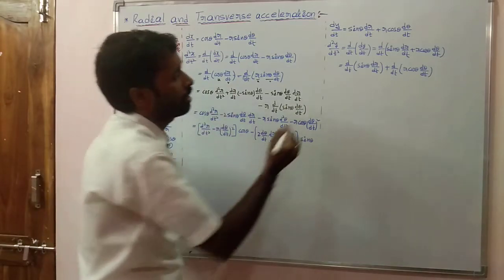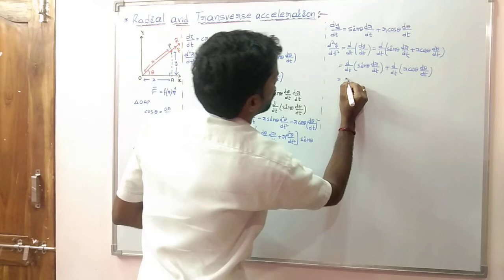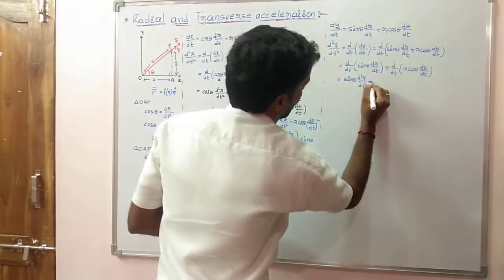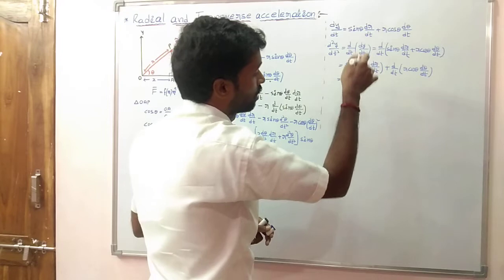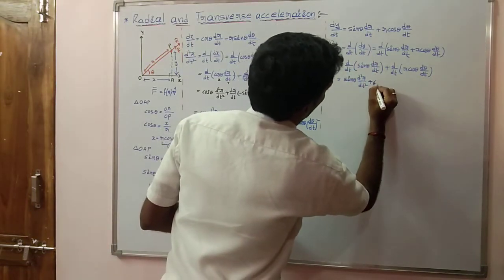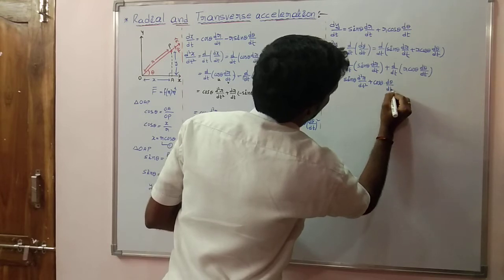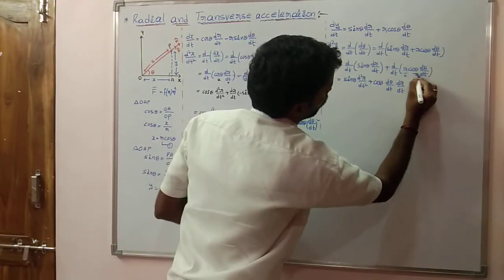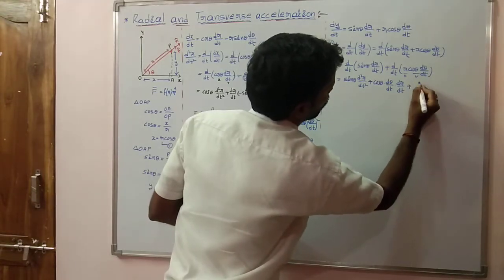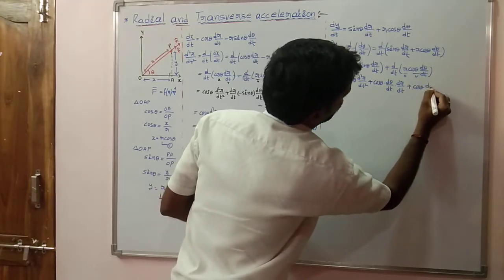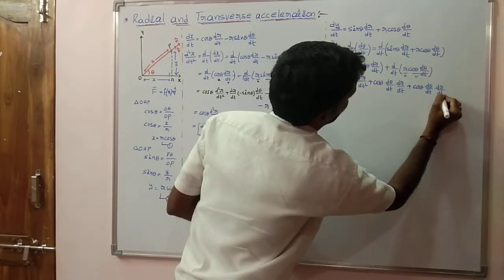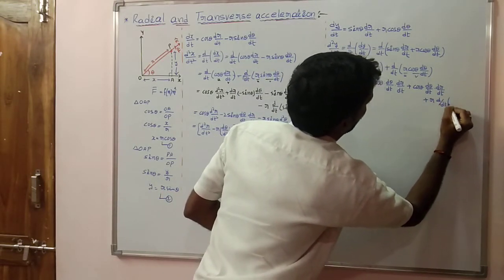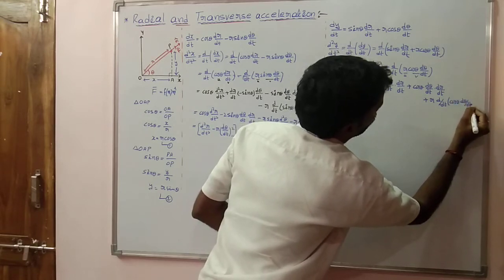Now we apply the uv formula. We get sin theta into d²r/dt², plus the derivative of sin theta (which is cos theta times theta derivative d theta/dt), and then cos theta into d theta/dt into dr/dt. For the second group, we apply the uv formula letting r be u and the remaining term be v, giving r into d/dt of (cos theta into d theta/dt).